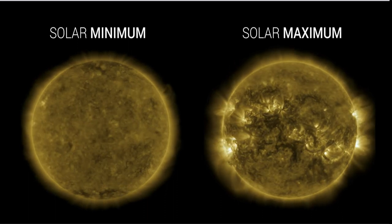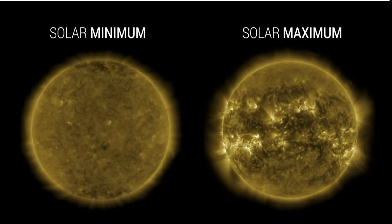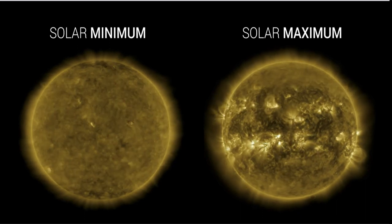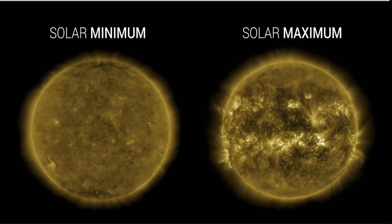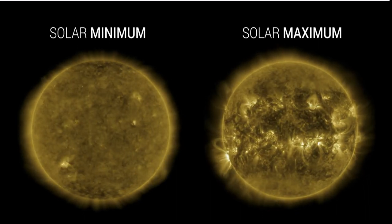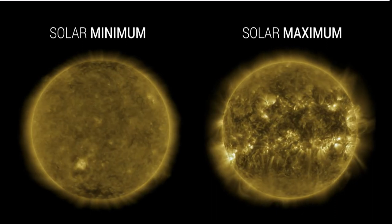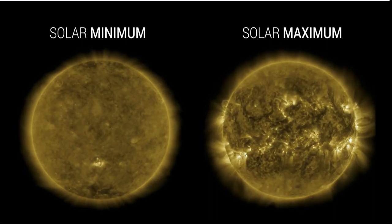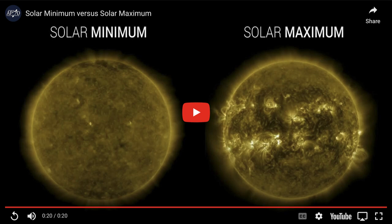Now what do we mean by solar minimum and solar maximum? Well that is a difference in the activity level of the sun. When we're at solar minimum the sun is very inactive and very calm. When we're at solar maximum the sun is very energetic and giving off a lot more things like solar flares that we see, and that can affect us here on earth.